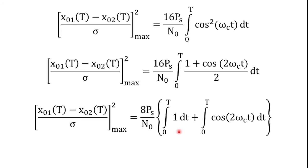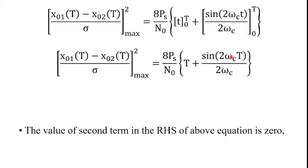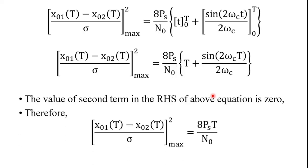Evaluating the integrals: ∫_0^T 1 dt = T, and ∫_0^T cos(2ωct) dt = [sin(2ωct) / (2ωc)]_0^T. After applying the limits and simplifying, the second term evaluates to 0. Therefore, the signal-to-noise ratio becomes: [x01(t) − x02(t)] / σ² = 8Ps·T / N0.